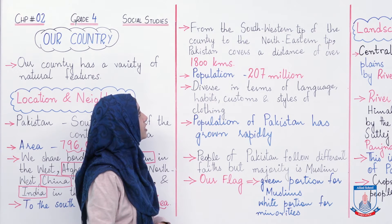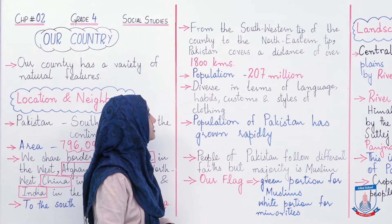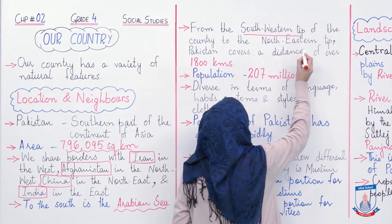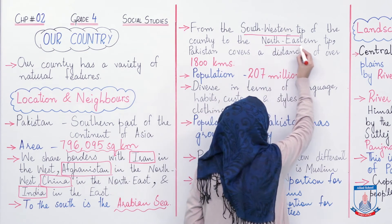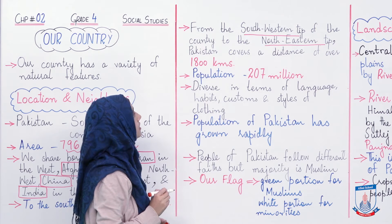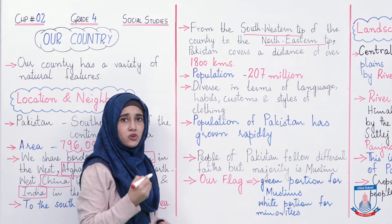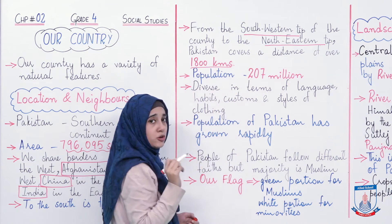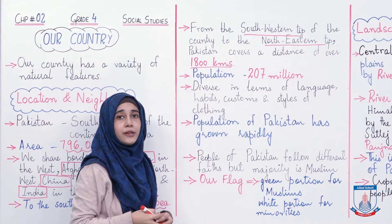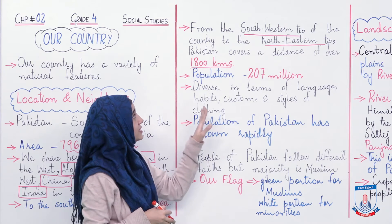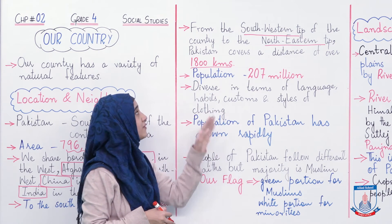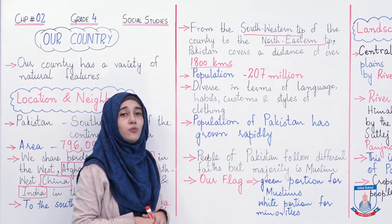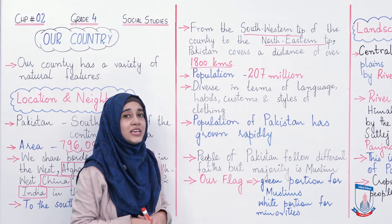From the south western tip of the country to the north eastern tip, Pakistan covers a distance of over 1800 kilometers. Is se pehle maine aap ko figure bataya tha woh tha humaare mulk ka area, ab main aap ko bata rahi hoon ke Pakistan south western tip se north eastern tip ki taraf kitna area cover karta hai — that is 1800 kilometers. Now let's talk about population, yaani humaare mulk ki abaadi jo ke is waqt taqreeban 20 crore se zyada ho chuki hai.